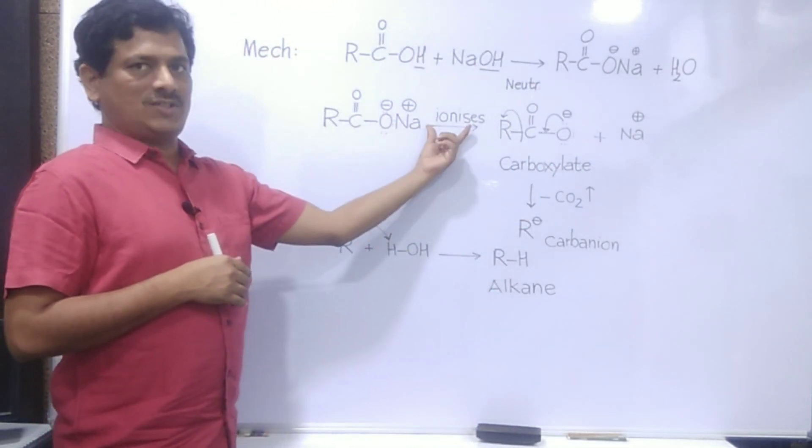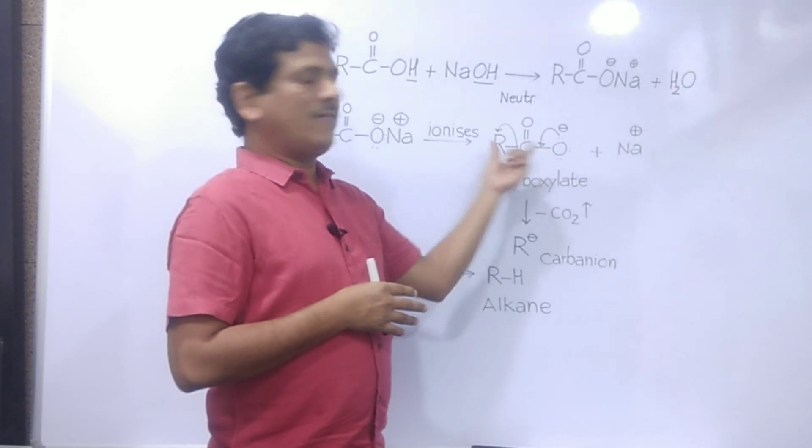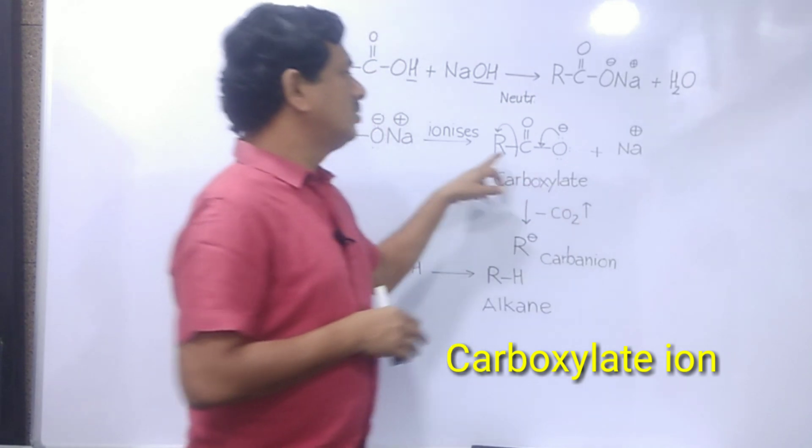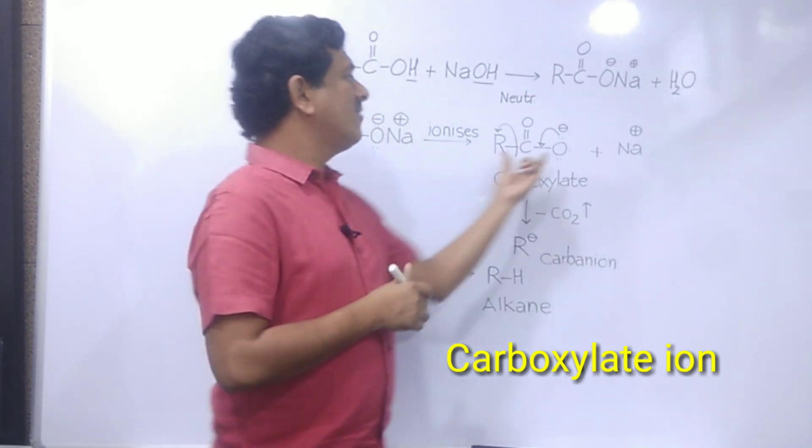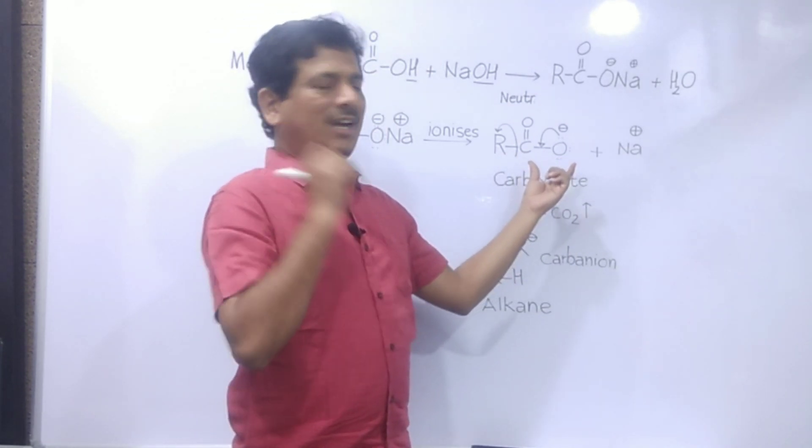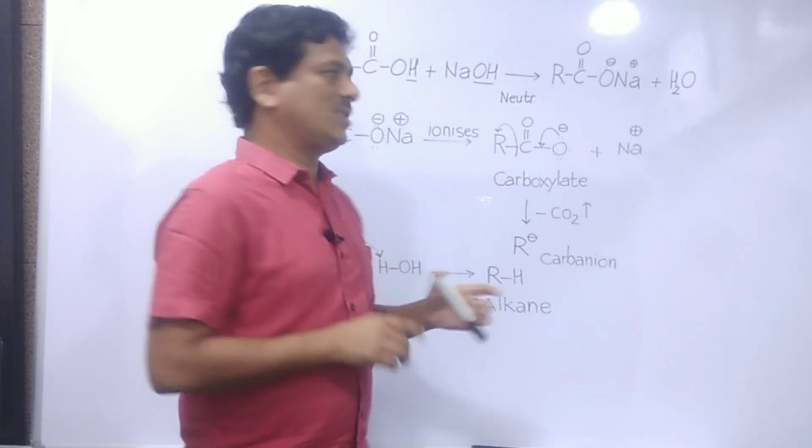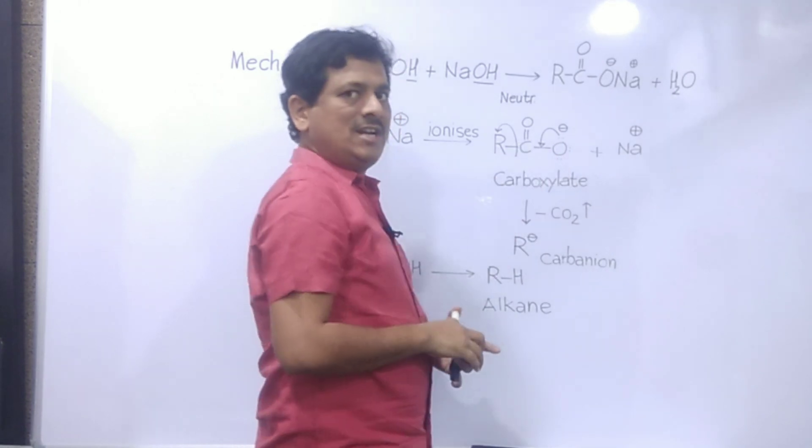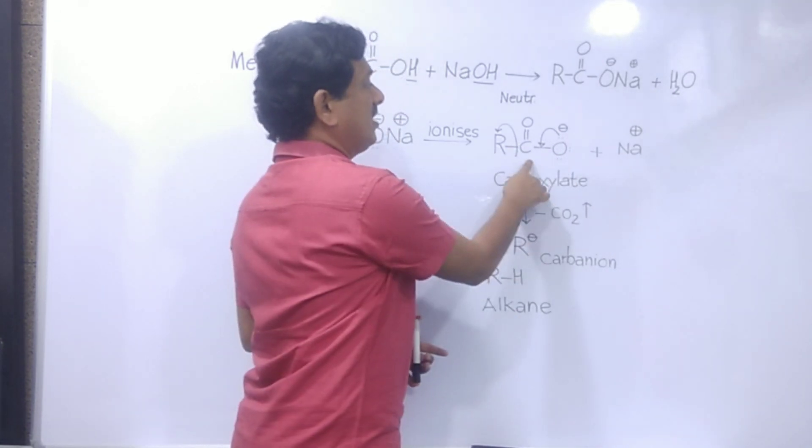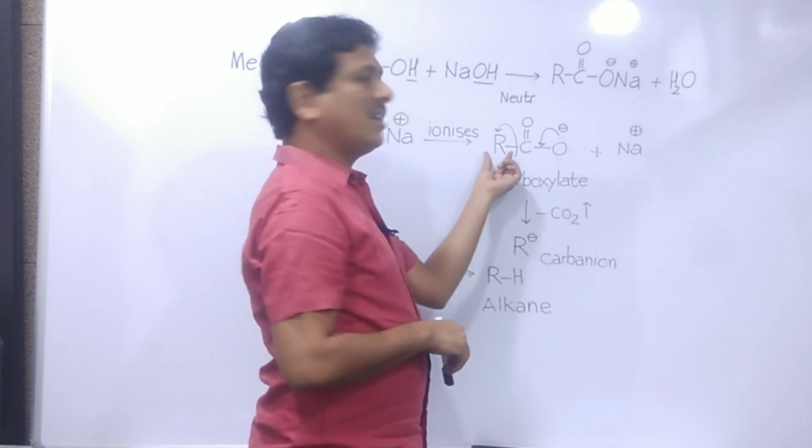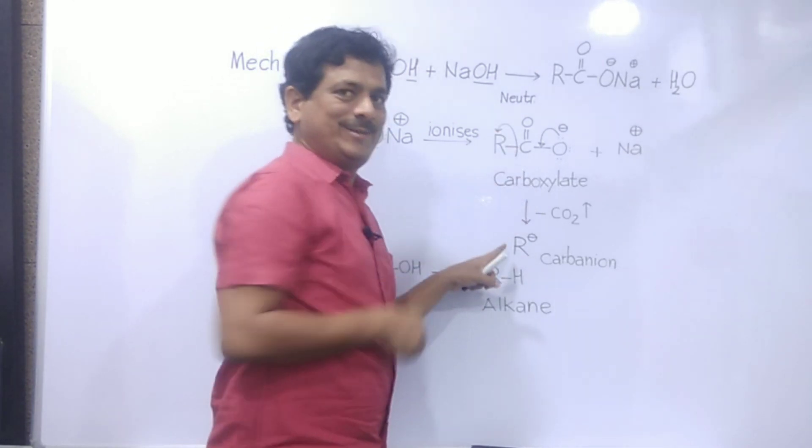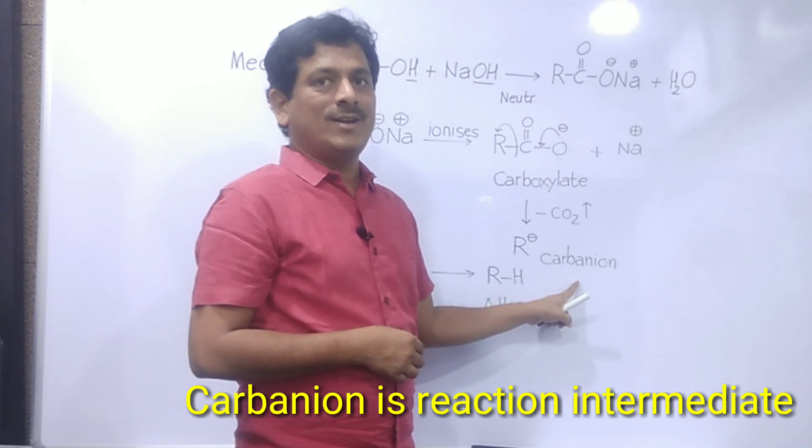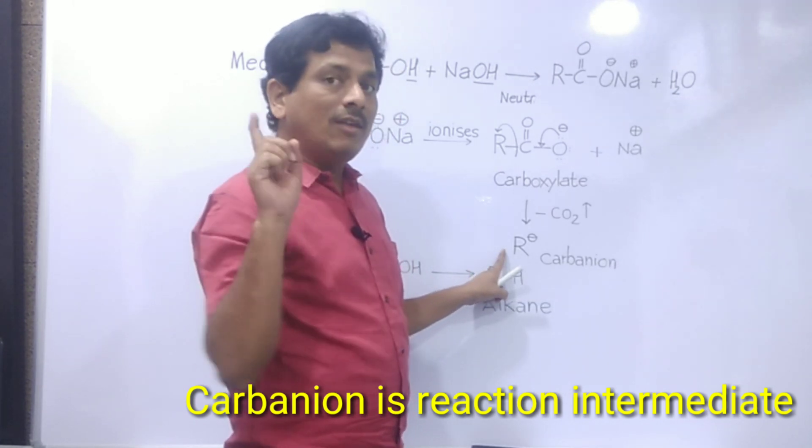Now that sodium carboxylate ionizes to form RCOO- (carboxylate ion) plus sodium cation. Now this carboxylate will evolve carbon dioxide. The evolution of carbon dioxide takes place this way: the negative charge, a pair of electrons, comes in between carbon and oxygen. At the same time, the bond between R and C breaks heterolytically, and R- is generated. This is carbanion, a reaction intermediate of this reaction.